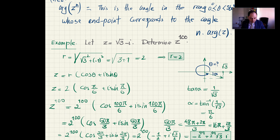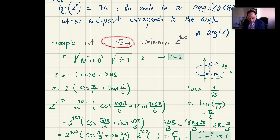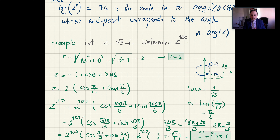De Moivre's formula is very handy. Even though rewriting in polar form makes the expression look more complicated, the benefit is that it allows us to raise to high powers very easily. That's the benefit of using De Moivre's formula.